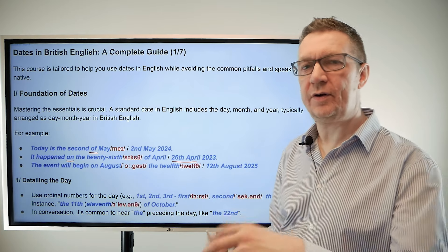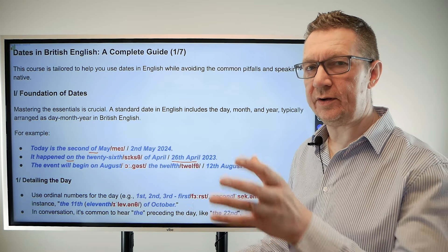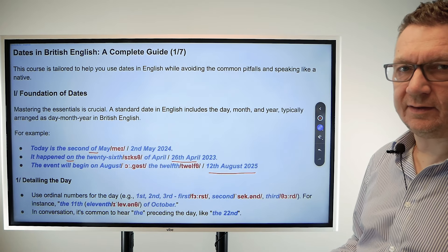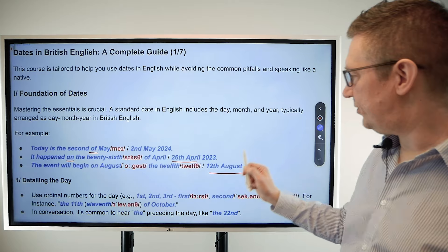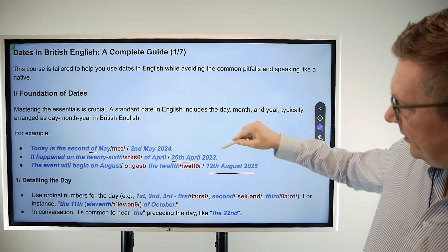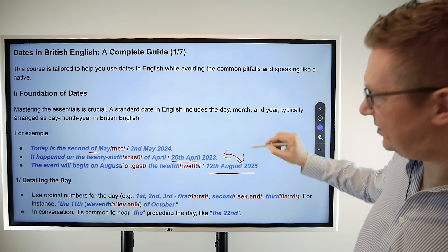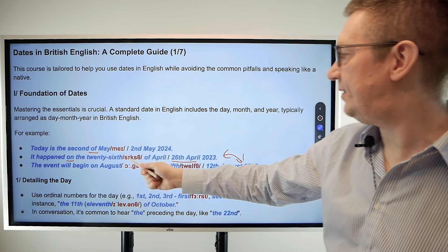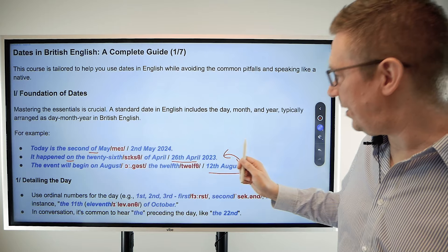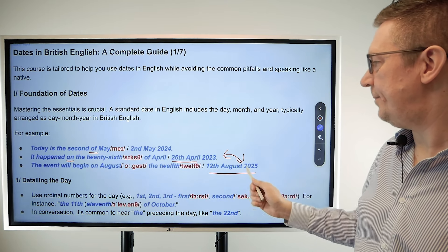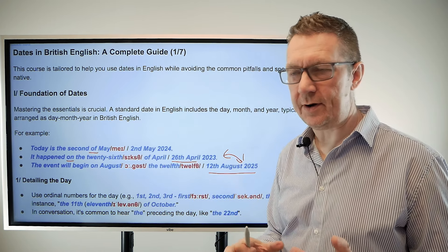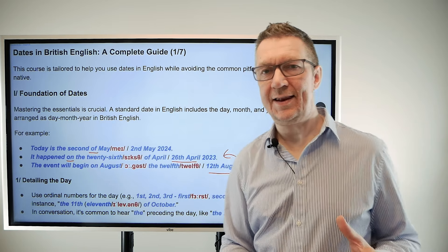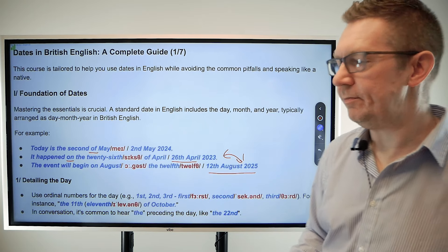So the next one: 'The event will begin on August the 12th.' In British English we say 'August the 12th' — we don't say 'August 12th' like in American English. These two written examples look pretty much the same, but we can say them two ways: 'on the 26th of April' and 'on August the 12th.' So two spoken forms, one written form — good to remember.